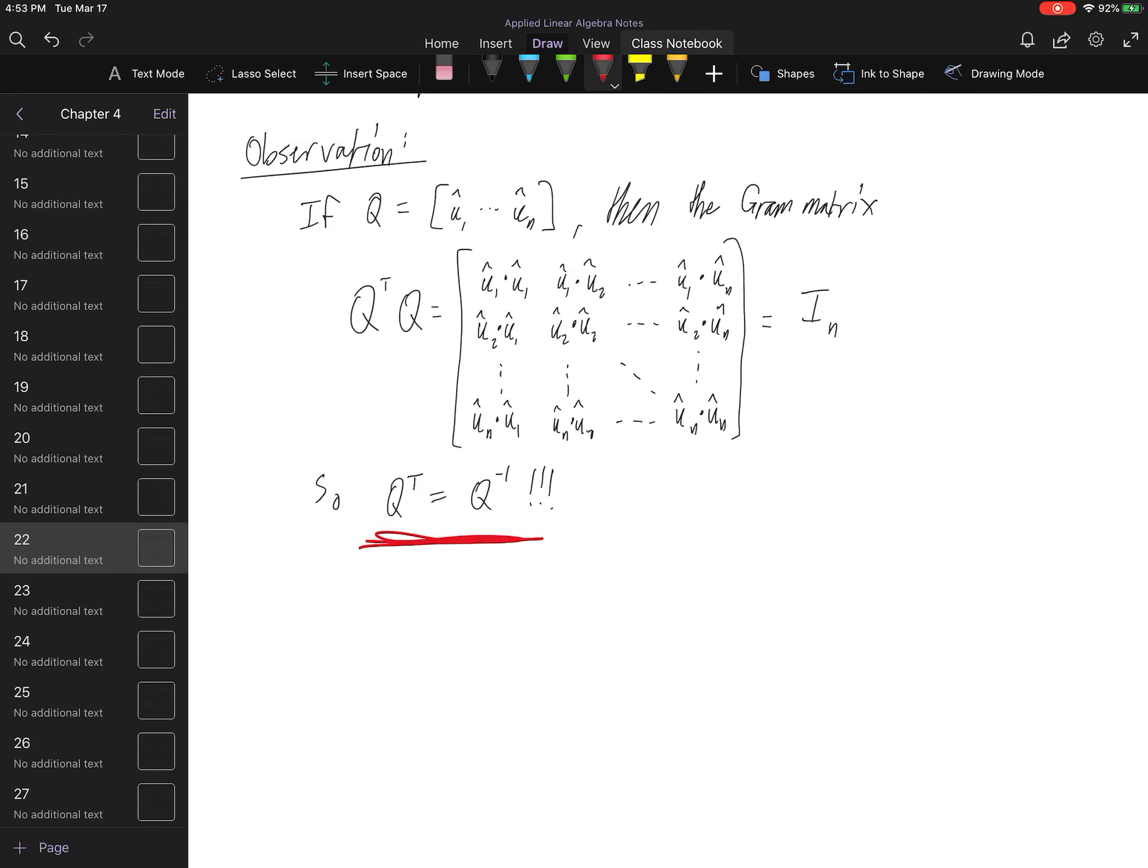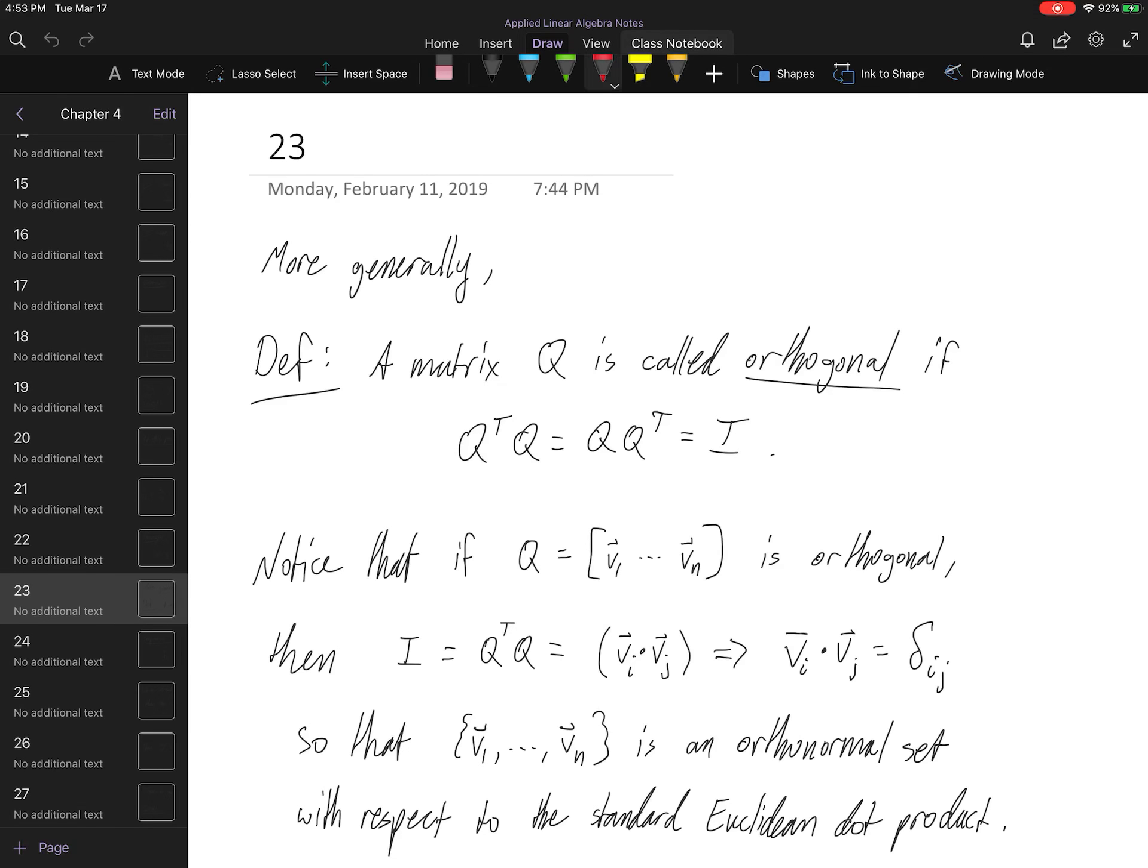And specifically, when Q is square. I want to make it very clear. This only works for square matrices. But that's what we're going for. We're trying to show that there's an easy way to compute the inverse of the Q matrix where we actually don't have to compute a damn thing.